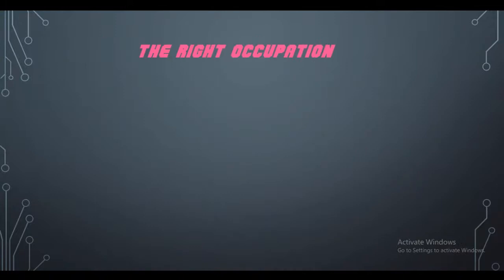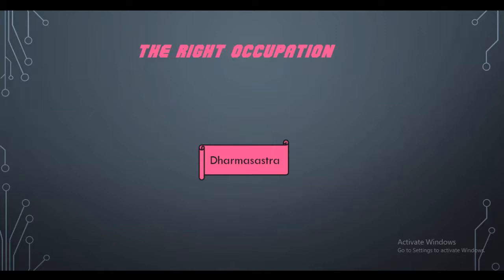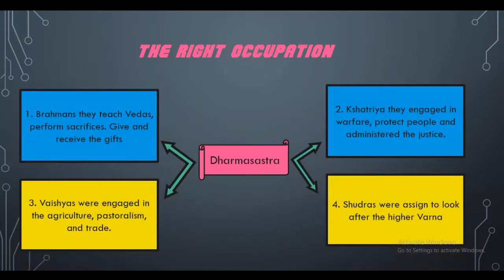As already mentioned, the Brahmins made a law book called the Dharmashastra, and in this book they described what different jobs each caste was to perform. The first caste is the Brahmins. All Brahmins had to teach the Vedas to the people — the Vedas being religious texts. They also had to perform sacrifices, as you may have seen in Indian videos where people sacrifice animals to the gods. In addition, they used to give grants to people and receive gifts from people.